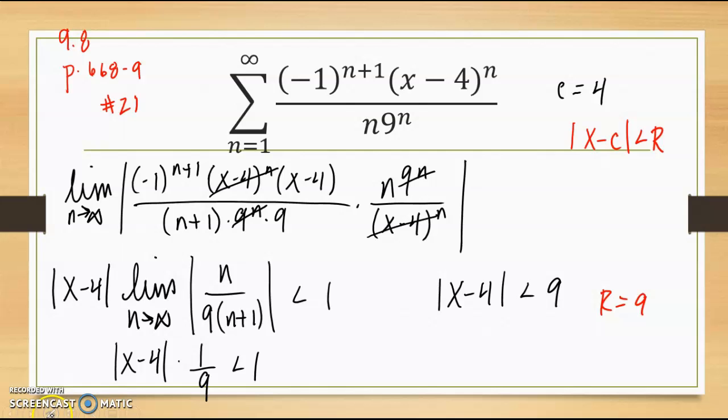Now when I go to determine the endpoints that I have to test, negative 9 is less than x minus 4, which is less than positive 9. Adding 4, negative 5 is less than x, which is less than 13.